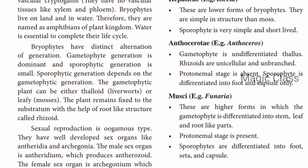The alternation of generation is the basis on which reproduction takes place. Sporophytic generation depends upon the gametophytic generation. The gametophytic plant can either be thaloid or leafy.